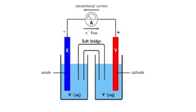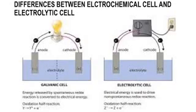The electrolytic cell has a positively charged anode and a negatively charged cathode, while the electrochemical cell has a negatively charged anode and a positively charged cathode. In the electrolytic cell, the redox reaction — reduction and oxidation — takes place in one vessel. But in the electrochemical cell, this redox reaction takes place in separate vessels.